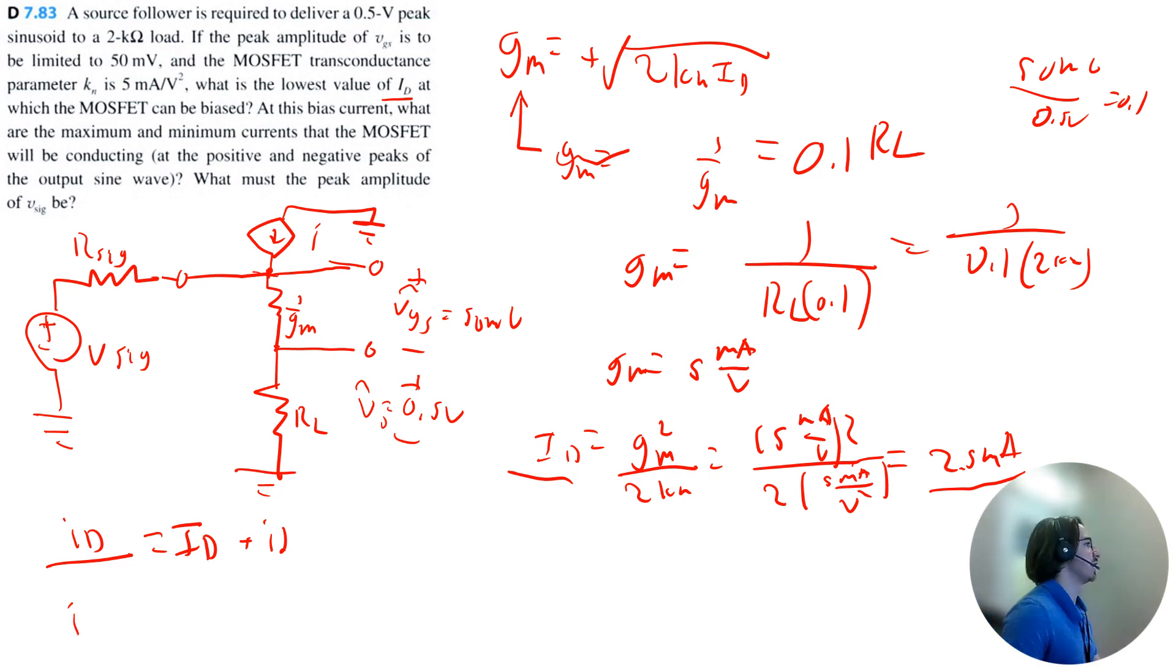And we can calculate the AC current to be the output voltage. It's amplitude. This is really just the peak amplitude of the AC current, divided by the load resistance. So that's going to be 0.5 volts divided by 2 kilo ohms. That gets us 0.25 milliamps.